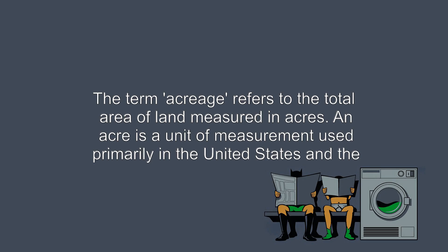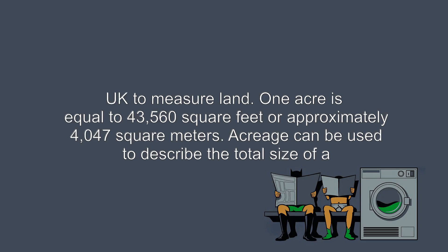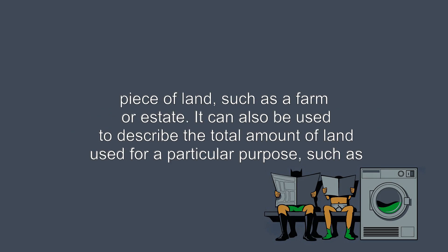The term acreage refers to the total area of land measured in acres. An acre is a unit of measurement used primarily in the United States and the UK to measure land. One acre is equal to 43,560 square feet or approximately 4,047 square meters. Acreage can be used to describe the total size of a piece of land, such as a farm or estate.